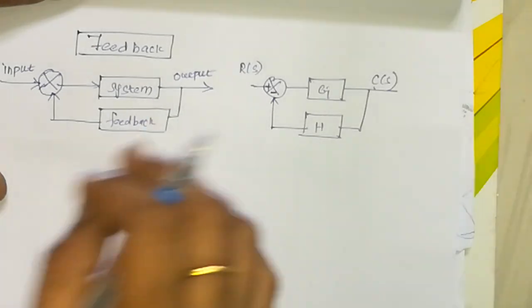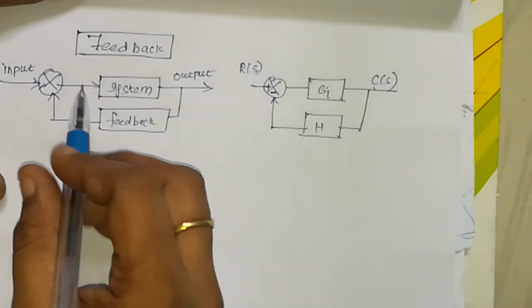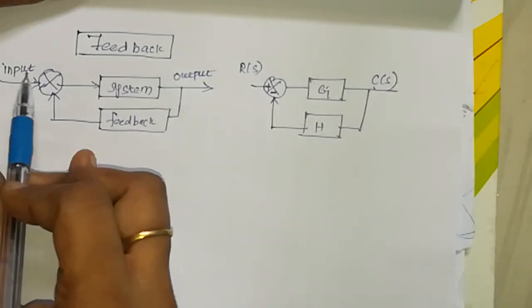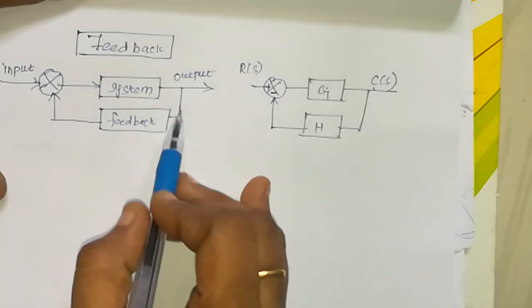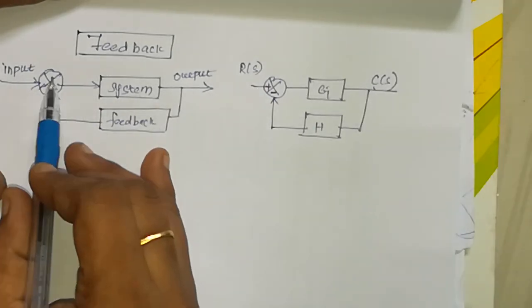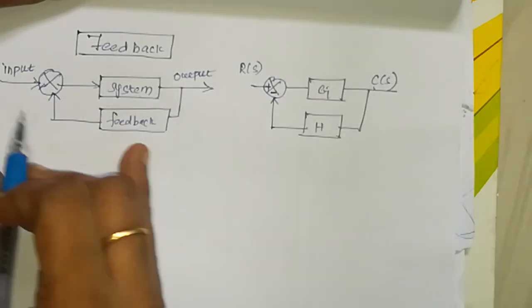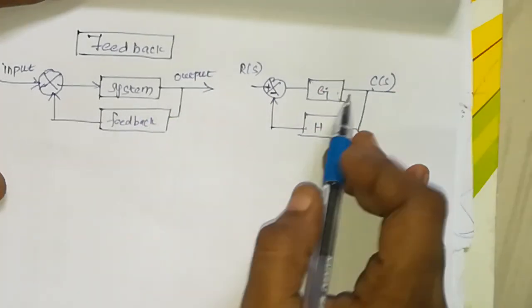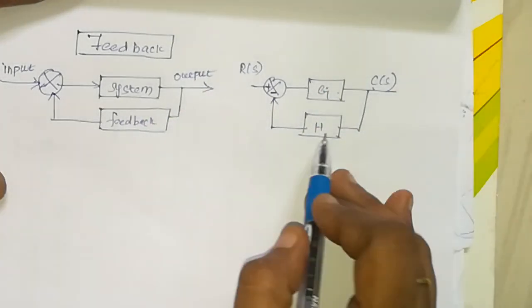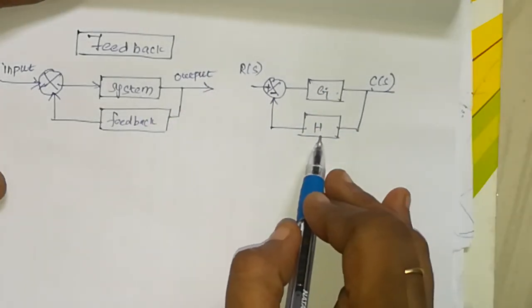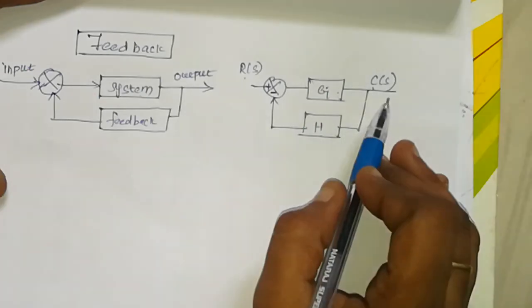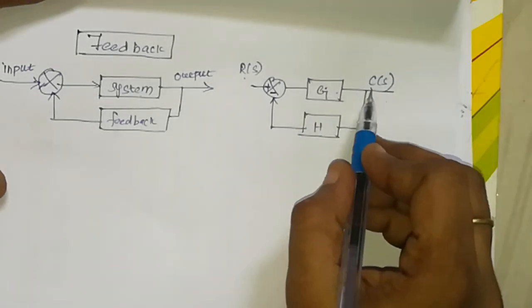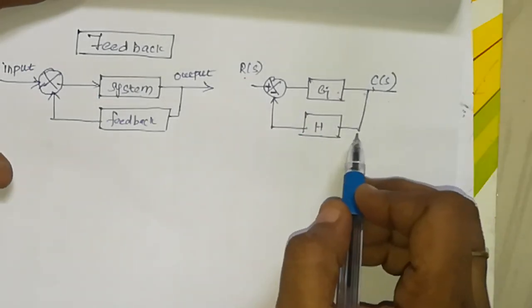Let us dive into the feedback topic. If we get the feedback role, we put a free feedback change. The input is R of S, and the output is C of S.